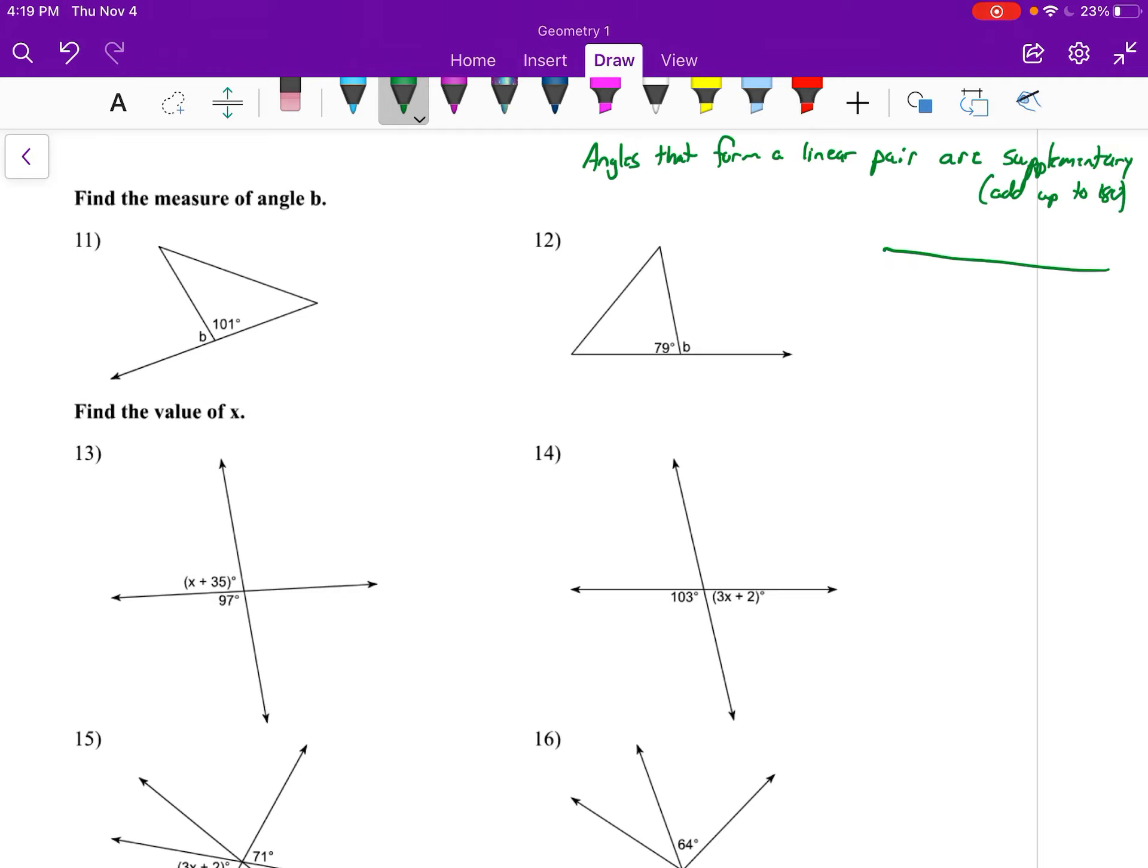Let me sketch something for linear pairs. Angles one and angle two would form a linear pair. Even if the line crossed like this, angle one and angle two still form a linear pair. If this was angle three, angle one and three are a linear pair. So those are linear pairs—they will add up to equal 180 degrees.